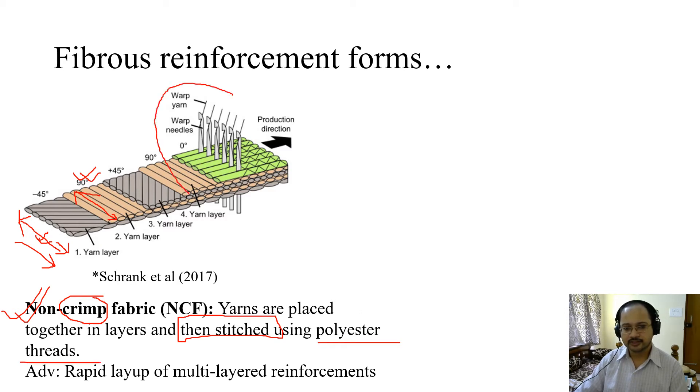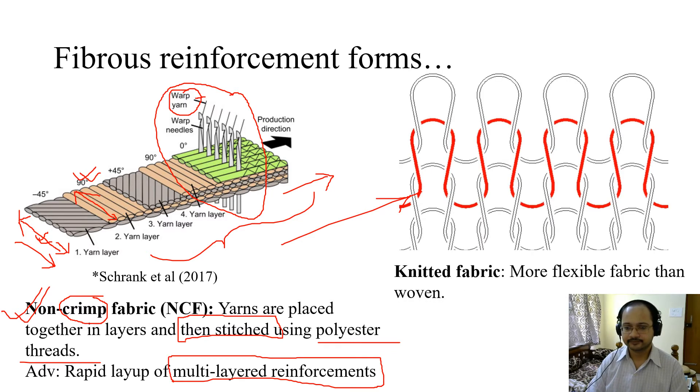Yarns are placed together in layers and then stitched using polyester threads. If you look into this arrangement, this is very similar to how sarees are made, with the help of stitching. In a similar way, you have the warp needles, this is the warp yarn, and you simply stitch it. This is moving in this direction, and the stitching is fixed here. After stitching is done, the entire structure comes out. The advantage is rapid layup of multi-layered reinforcements. Stitching is fast. You can easily manufacture multi-layered reinforcements.